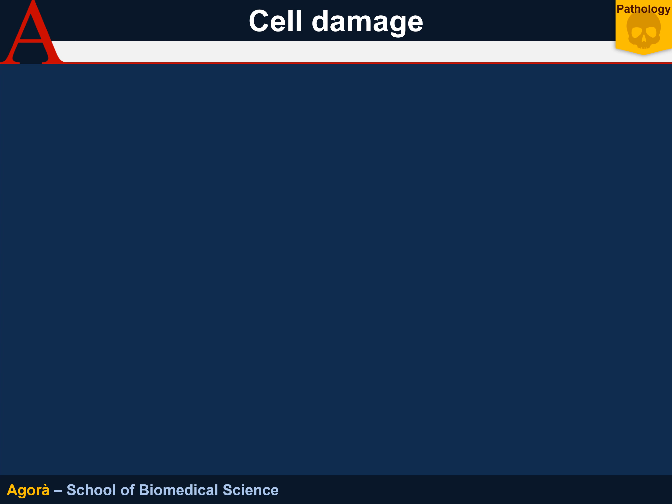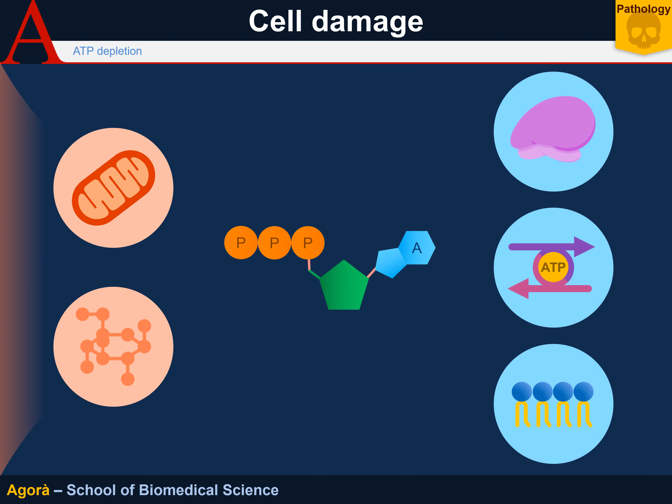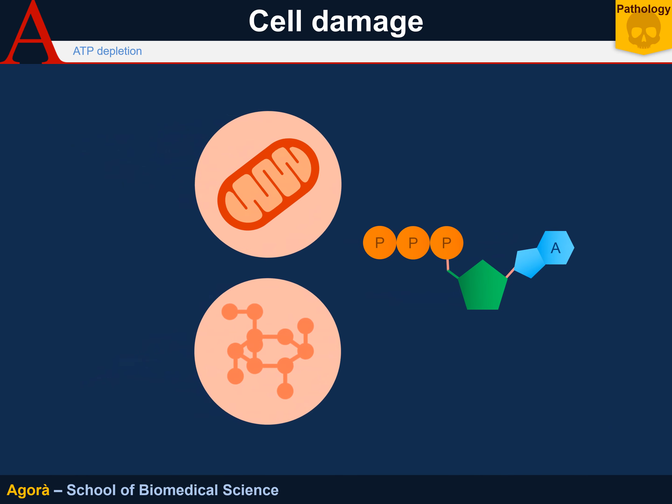Let's start by talking about ATP depletion, one of the most basic forms of cell damage. Cell loss of ATP inevitably leads to the block of cellular processes. Cells store energy in the form of ATP, adenosine triphosphate. ATP forms from oxidative phosphorylation and glycolysis, and is used for protein synthesis, membrane transport processes, and synthesis of structural molecules.